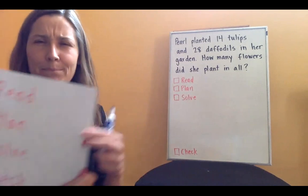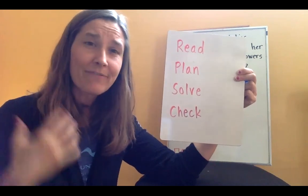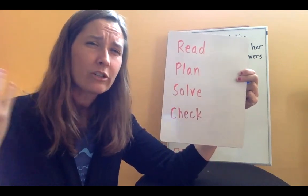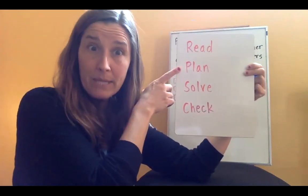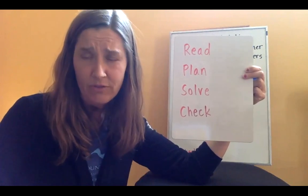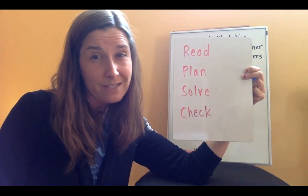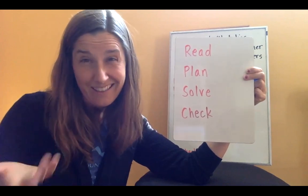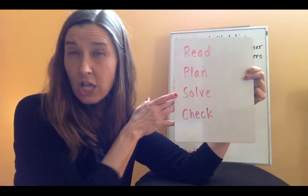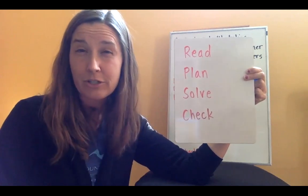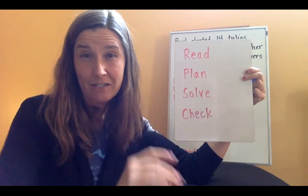And these are really important because this is actually what our brain does when we're thinking about solving a problem. First, we're listening or reading and learning what the problem is and we're kind of thinking, what is this story really about? Then we're coming up with a plan. What are you going to have to do to solve the problem? Maybe there's some clue words. Then you're going to actually solve it. Sometimes you draw a picture, you use number sentences and numbers to figure out the answer. And at the end, you always have to check to make sure that your answer makes sense.